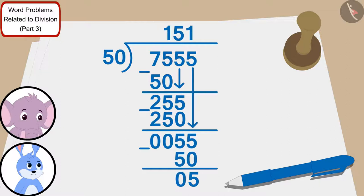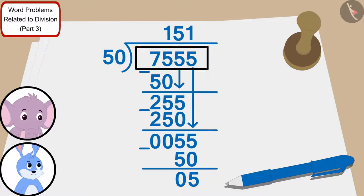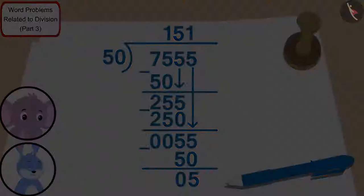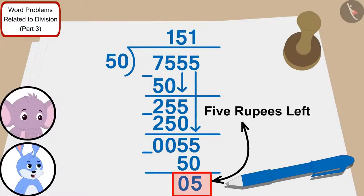We can divide 7555 by 50 in this way. Bunny and Appu will be able to distribute 50 rupees to 151 poor villagers with the amount they won. But Appu, we still have 5 rupees left!